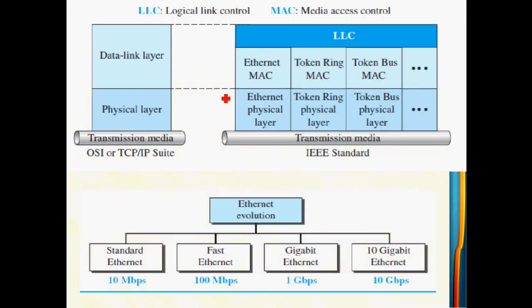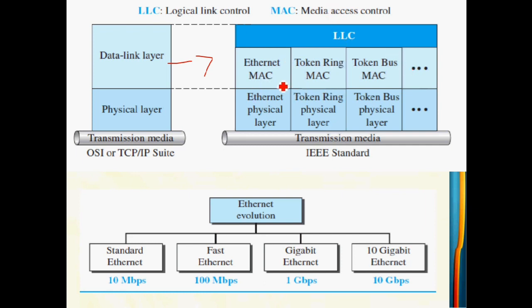For Ethernet, the OSI or TCP/IP layer is modified at the data link layer. The data link layer is divided into two sub-layers: the upper part is called LLC — Logical Link Control — and the lower part is called MAC — Medium Access Control. On the MAC layer we have many LAN protocols, including Ethernet, Token Ring, and Token Bus.